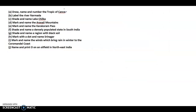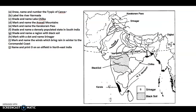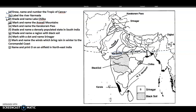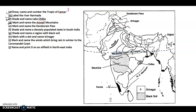Next set of questions — pause the video. The Tropic of Cancer is here and you have to mention the latitude as well: 23 and a half degrees North. Then label River Narmada — this is Narmada, you can see. Then shade and name Lake Chilka — this is Chilka Lake, this tiny part. Mark and name the Aravalli Mountains — this is Aravalli; I just used the highlighter so you can figure it out.